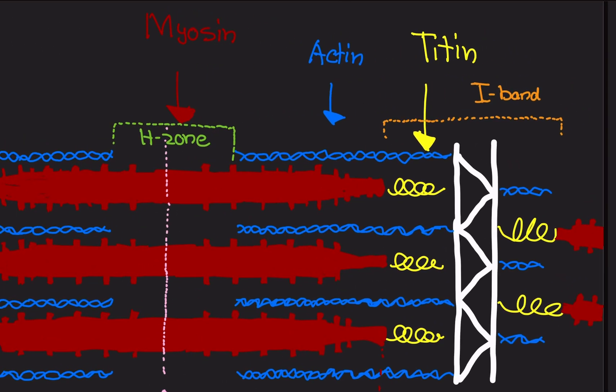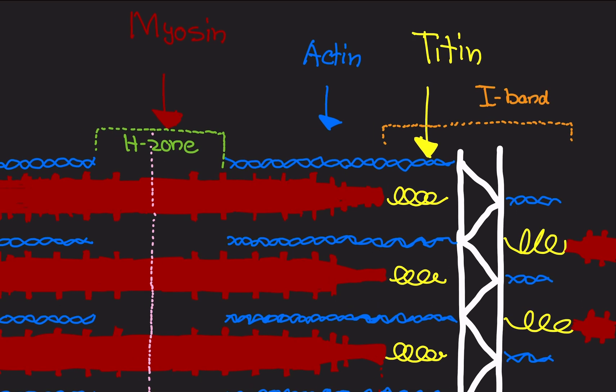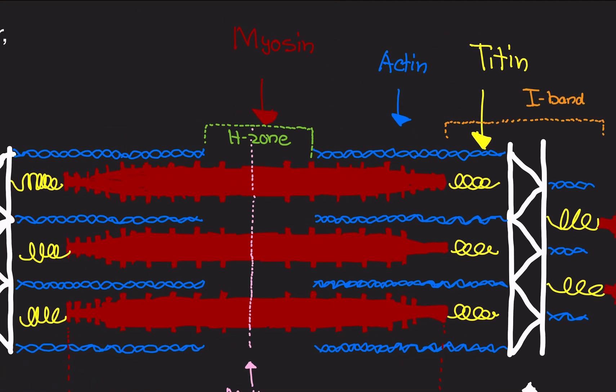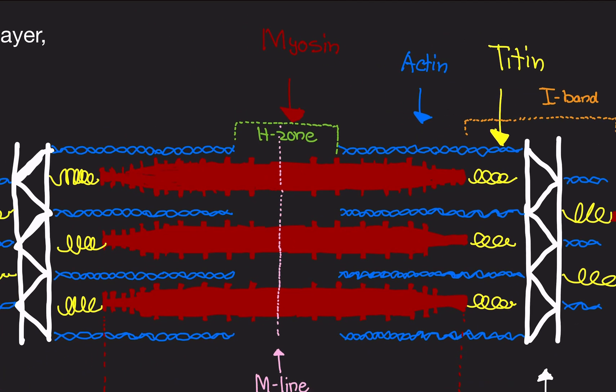You'll probably notice that there's something called titin. It's this yellow spring-like structure that's attached to myosin. So this titin, it literally acts as a spring. It binds to myosin and the other side, it binds to z-line. Basically, what titin does is it keeps myosin in place. So it doesn't just get cut off and be a big problem.